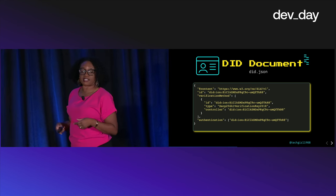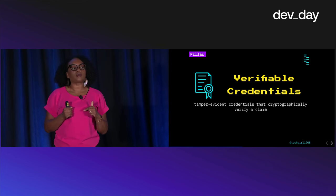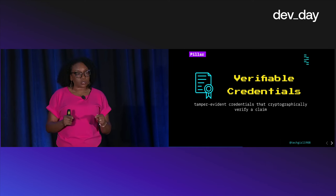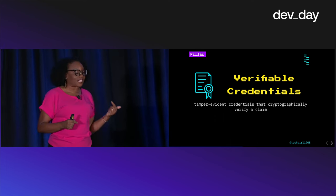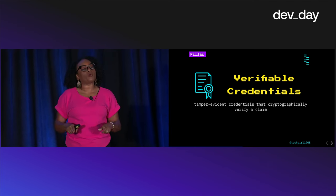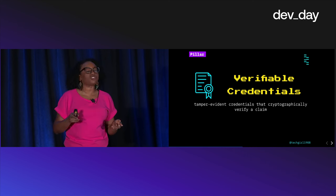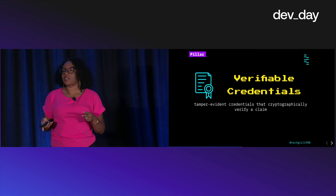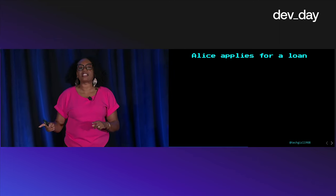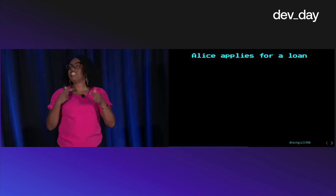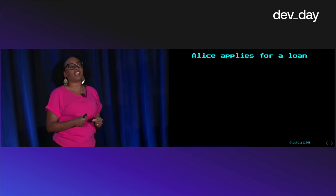The next pillar of Web 5 is verifiable credentials. Verifiable credentials are also a W3C standard and they work hand-in-hand with decentralized identifiers to enable trustless interactions, meaning two parties don't need to know or trust one another in order to engage. For example, let's say Alice is applying for a loan but the lender needs to verify a proof of income.